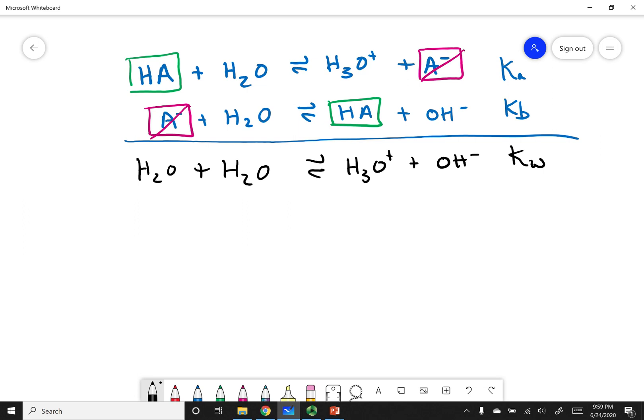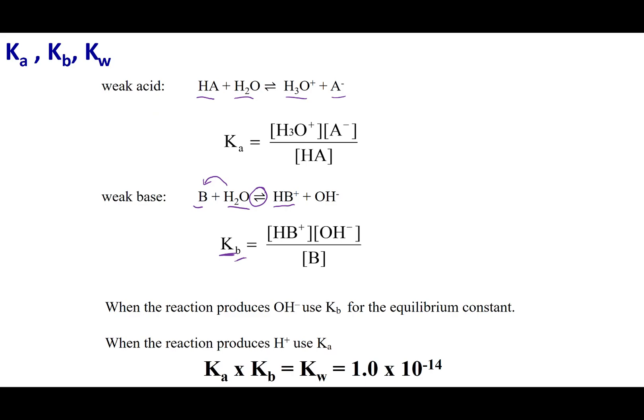Now this might look familiar to you. This is the autoionization of water, so this is Kw. If you remember from chapter 6, when I add two equations up, the resulting K is going to be the multiplication of those two Ks. So Ka times Kb is going to equal Kw. Now this is true if you use a conjugate acid-base pair. My acid was HA, and my base was A-, and this is the stipulation for this equation to work. I have to have conjugates.